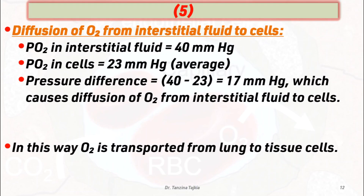The partial pressure of oxygen in interstitial fluid is about 40 mmHg and in the cell is about 23 mmHg on average. This pressure difference of 17 mmHg causes diffusion of oxygen from interstitial fluid into the cell. In this way, oxygen is transported from the lungs to the tissue cells.